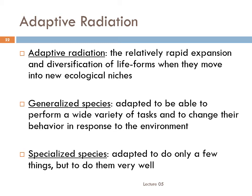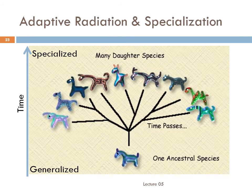It's important to understand that radiations occur throughout the living world. Understanding adaptive radiation requires understanding generalized and specialized traits. Some animals are generalized — adapted to perform a wide variety of tasks and to change their behavior in response to the environment, but they may not be particularly efficient at what they do. Specialized species follow the opposite strategy: they're adapted to do only a few things, but they do them very, very well. Usually, only generalized species are able to take full advantage of new niches because they are able to change to fit the new environment. Thus, the ancestral species of an adaptive radiation is almost always more generalized, and its descendants are more specialized.